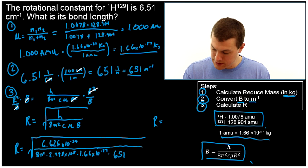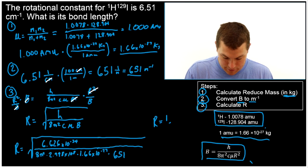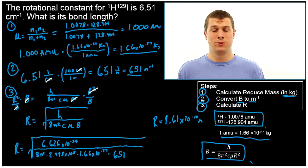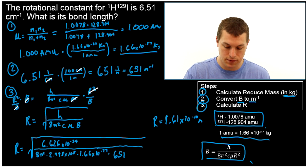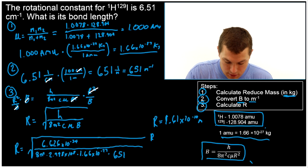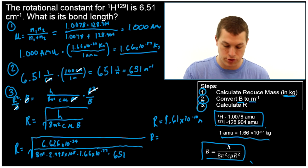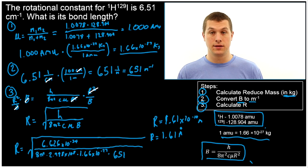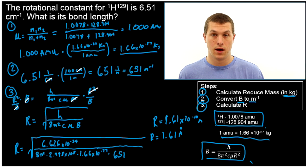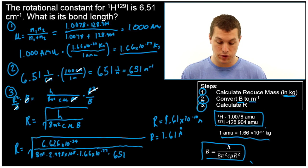All right, so when we calculate that out, what we'll actually get is 1.61 times 10⁻¹⁰ meters. Is that a reasonable value? Remember, when you get to the end of a problem like this or any other problem, you want to ask yourself, does my answer make sense? Well, to think about it, let's put that into angstroms, which just means we multiply by 10¹⁰. That would be 1.61 angstroms. A bond length is usually around an angstrom, so that makes sense.